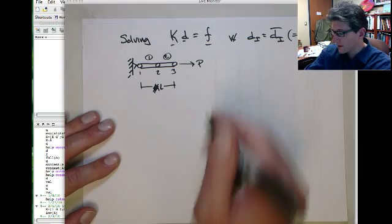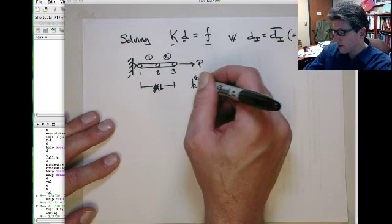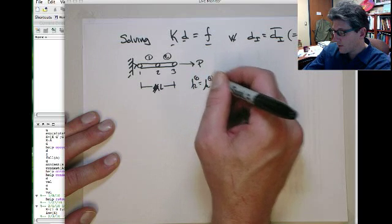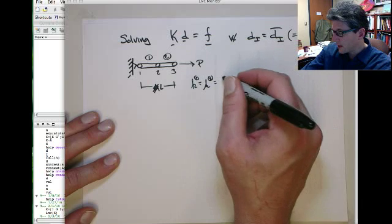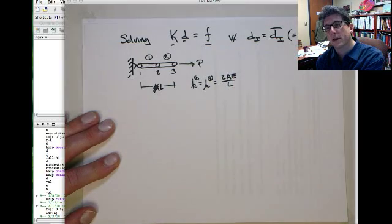So each element is L on 2, so the spring stiffness of each element, K1 and K2, is equal. And it's going to be 2AE on L, where L is the total length.